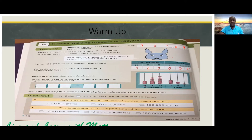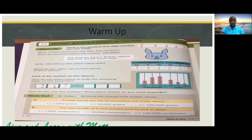Let's see — the hundred thousands will be three, so we're going to write three here. The ten thousands will be six, so we're going to write sixty thousand. And the thousands will be seven. Now let's take a look at the hundreds — we have four, two, then one. So we can represent this abacus with the number three hundred and sixty-one thousand, four hundred and twenty-one.